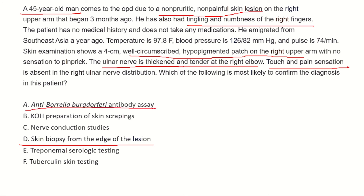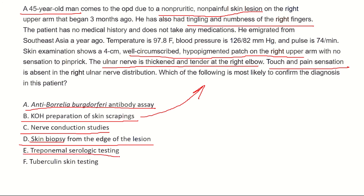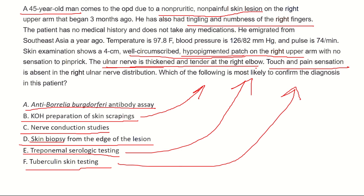Anti-Borrelia burgdorferi antibody assay is for Lyme disease, which does not present with these characteristics. KOH preparation of skin scrapings is for fungal infections, which do not present in this manner. Nerve conduction studies would appear abnormal, but the definitive diagnosis for leprosy is skin biopsy. Treponemal serologic testing is for syphilis, which does not typically present with nerve thickening and hypopigmented patches. Tuberculin skin test is for Mycobacterium tuberculosis, which rarely presents with these clinical features.